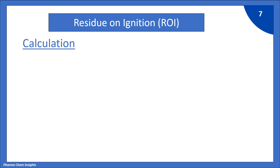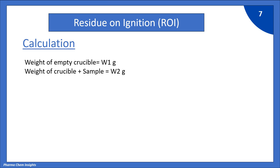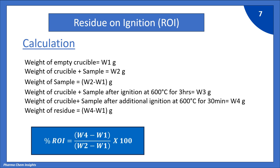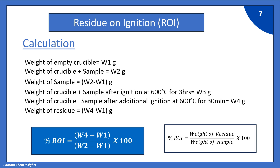Now let us see the calculation. Weight of empty crucible = W1 grams. Weight of crucible plus sample = W2 grams. Weight of sample = W2 minus W1 grams. Weight of crucible plus sample after ignition at 600 degrees Celsius for 3 hours = W3 grams. Weight of crucible plus sample after ignition at 600 degrees Celsius for 30 minutes = W4 grams. Weight of residue = W4 minus W1 grams. The formula: Percentage ROI = (W4 − W1) / (W2 − W1) × 100, which is weight of residue divided by weight of sample, multiplied by 100.